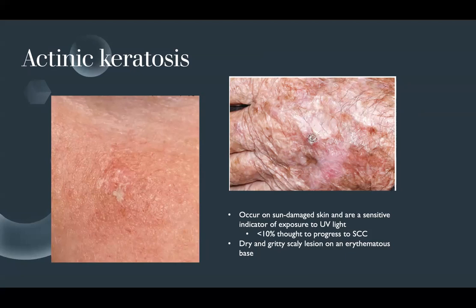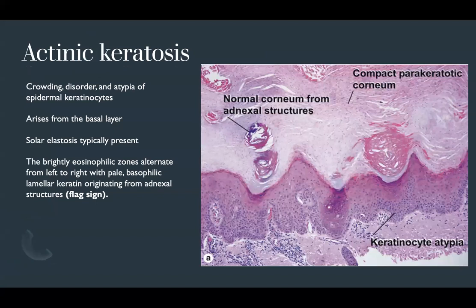Actinic keratoses are often dry, gritty, scaly lesions on an erythematous base. On histology, you see disorder of the keratinocytes especially at the basal layer with hyperplasia, crowding, and atypia. The key to separate this from Bowen's disease is that you don't have full-thickness atypia — as you go higher, cells maintain maturation with granular layer formation, flattening of keratinocytes, and transition into stratum corneum with orthokeratosis and parakeratosis. The dysplasia skips adnexal structures.